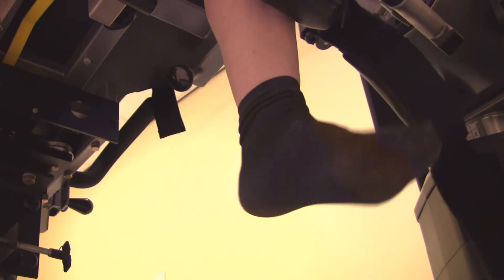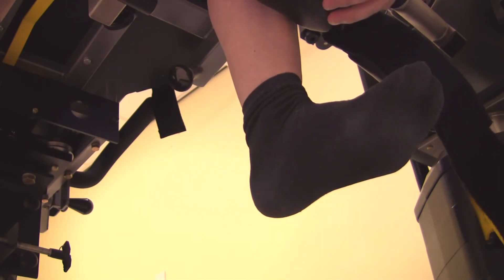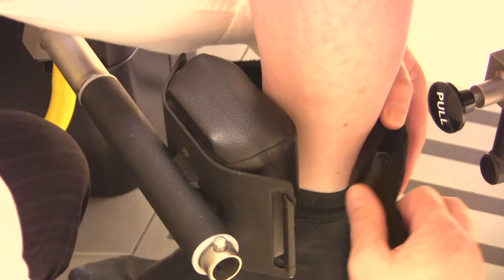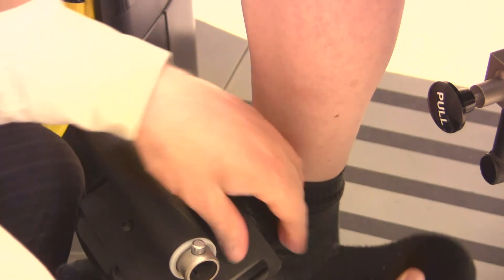To position the calf pad on the shin, start by maximally dorsiflexing the foot. Then adjust the pad until it hits the top of the foot. Secure using the strap. This position is consistent and will not limit the movement of the ankle.